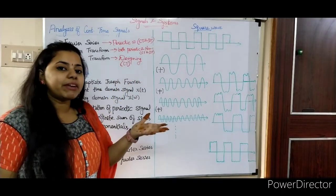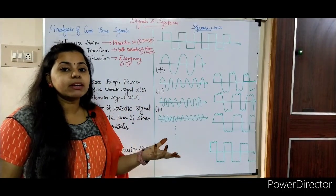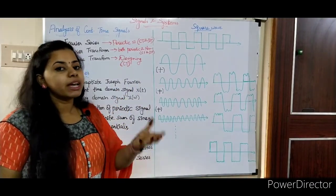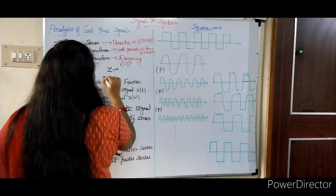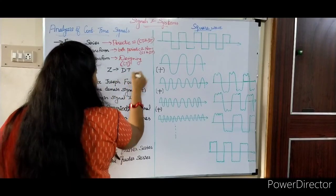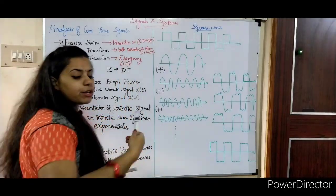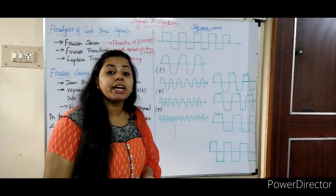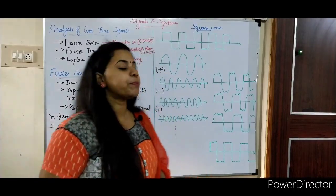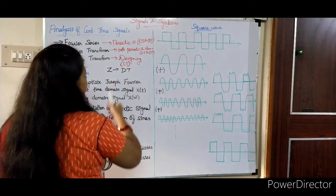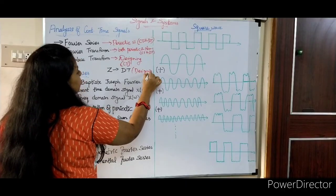The Z transform is used for discrete time signals — for analysis and also for designing purposes. The Fourier transform is able to analyze the discrete time signal, while the Z transform is used for designing in the discrete domain.